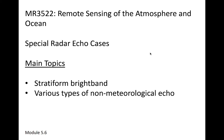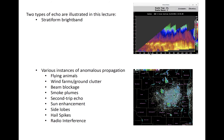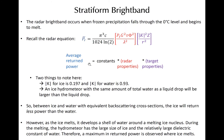This module will discuss a variety of different types of special echoes, including the stratiform bright band and a variety of non-meteorological echoes you may encounter when viewing radar data. We'll discuss various types of anomalous propagation listed at the bottom. First, we'll discuss the stratiform bright band.